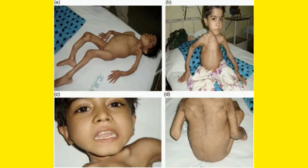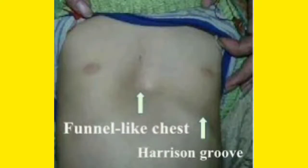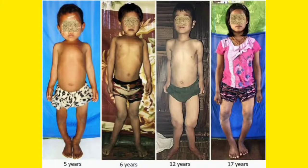In picture B you can see pigeon chest — how the chest looks like a pigeon — and sometimes frontal bossing can also be found. Another picture shows funnel-like chest and Harrison's groove. Among another group of patients all having rickets, the first patient shows mild bowing, and the second patient shows knock knees, which is genu valgum.